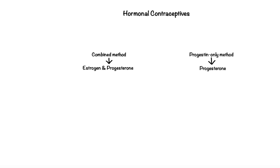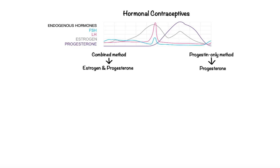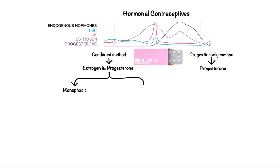Before we discuss how each of these methods prevents pregnancy, let's bring back our chart representing fluctuations of endogenous hormones throughout the normal phases of the menstrual cycle. Although hormonal contraceptives come in different forms, such as patches, injections, and vaginal rings, the most widely used form is the oral tablet, also known as the birth control pill. Combination birth control pills come in different formulations, commonly referred to as monophasic and multiphasic.